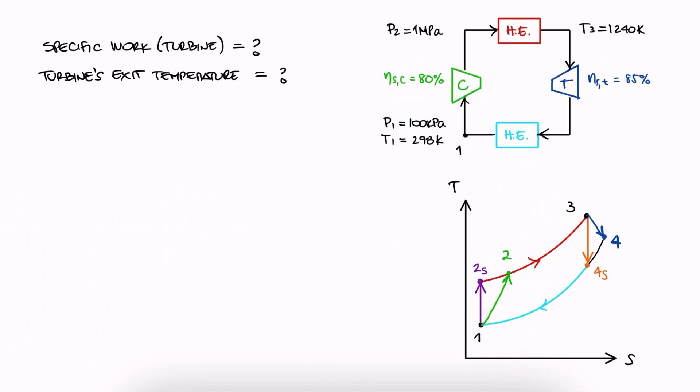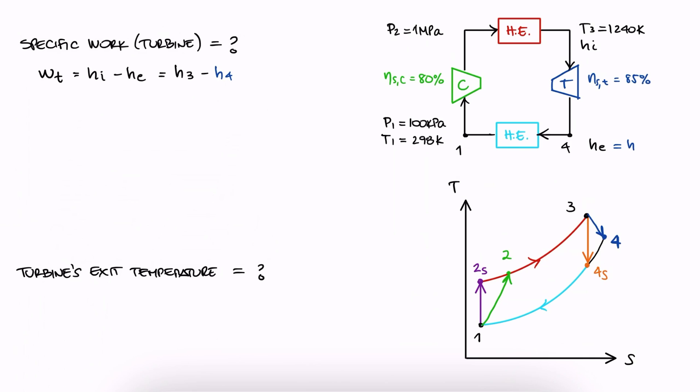The specific work that the turbine can produce, which is what we're looking for, will be the specific enthalpy at the inlet minus the specific enthalpy at the exit, meaning H3 minus H4. And since the efficiency of the turbine is defined as the real work we're trying to find over the theoretical ideal work H3 minus H4s, the work we're looking for is the given efficiency of the turbine times H3 minus H4s.